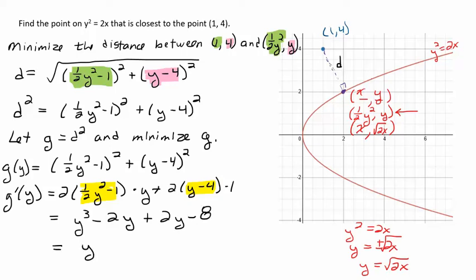Those 2y's are going to cancel out and I'm just going to get y cubed equals 8. Remember to find the minimum value, we need to find our critical point. So we're going to set this equal to 0. If I add the 8 over and take the cubed root, I'm going to get y equals 2.